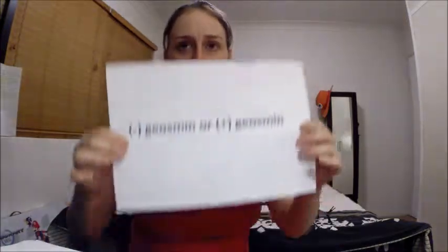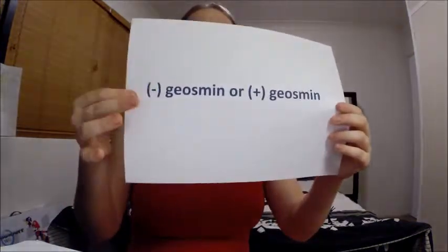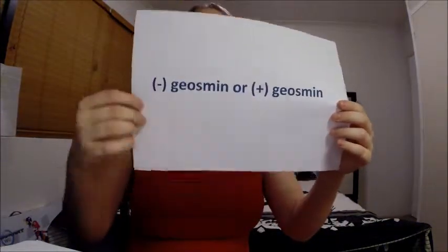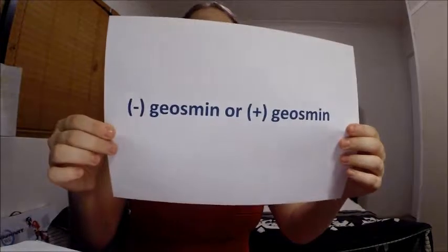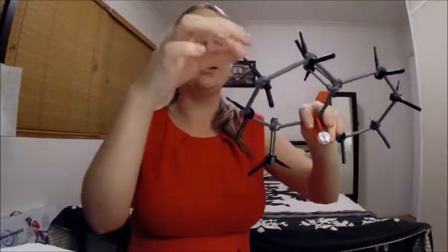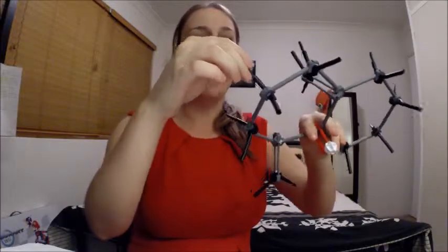So which one are we smelling when enjoying the fresh earthy scent? Only this enantiomer is synthesized in nature. So how do we know geosmin is an organic compound? Well, that's easy — it contains both hydrogen and carbon atoms, shown here and here. That's why.